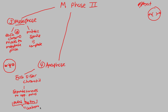The centromere is the first thing that pulls itself toward the opposite pole. Notice how the chromosome is in this structure — the centromere is pulling that way, being pulled by what can be represented as a kinetochore microtubule. That's what's happening in Anaphase.